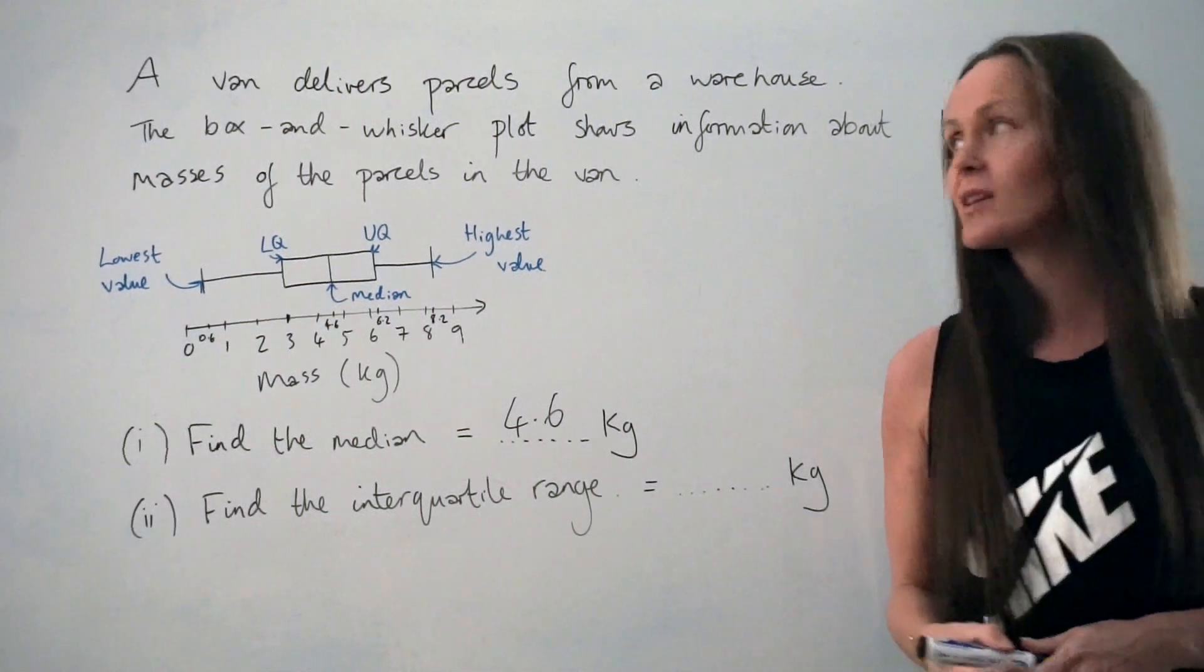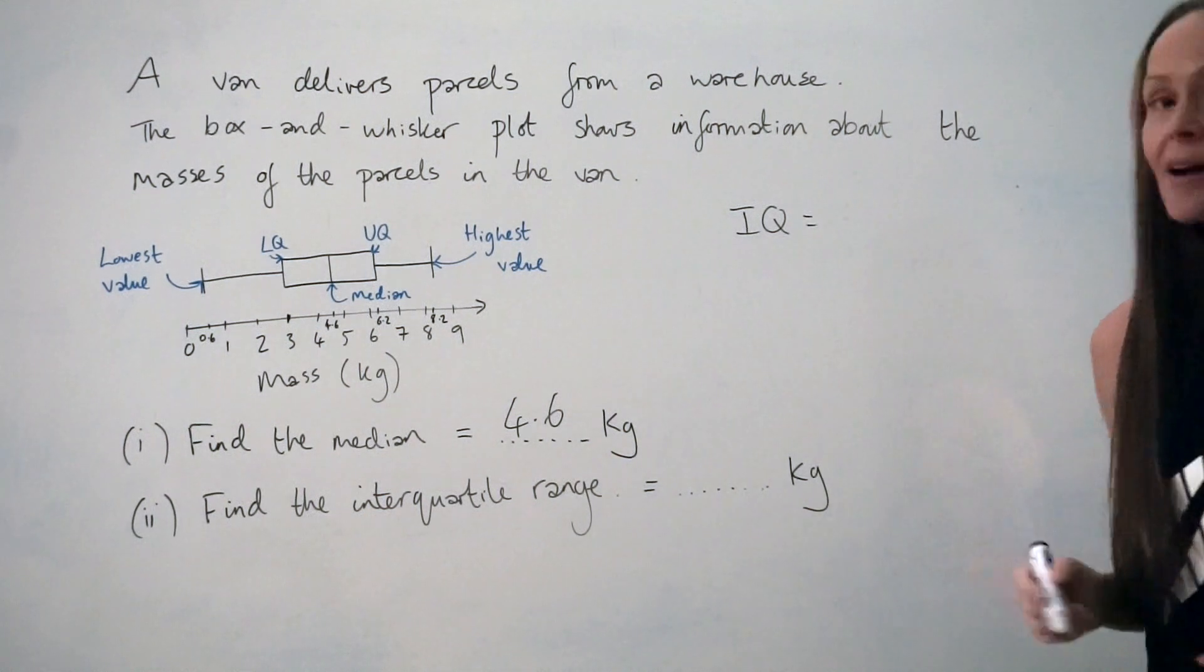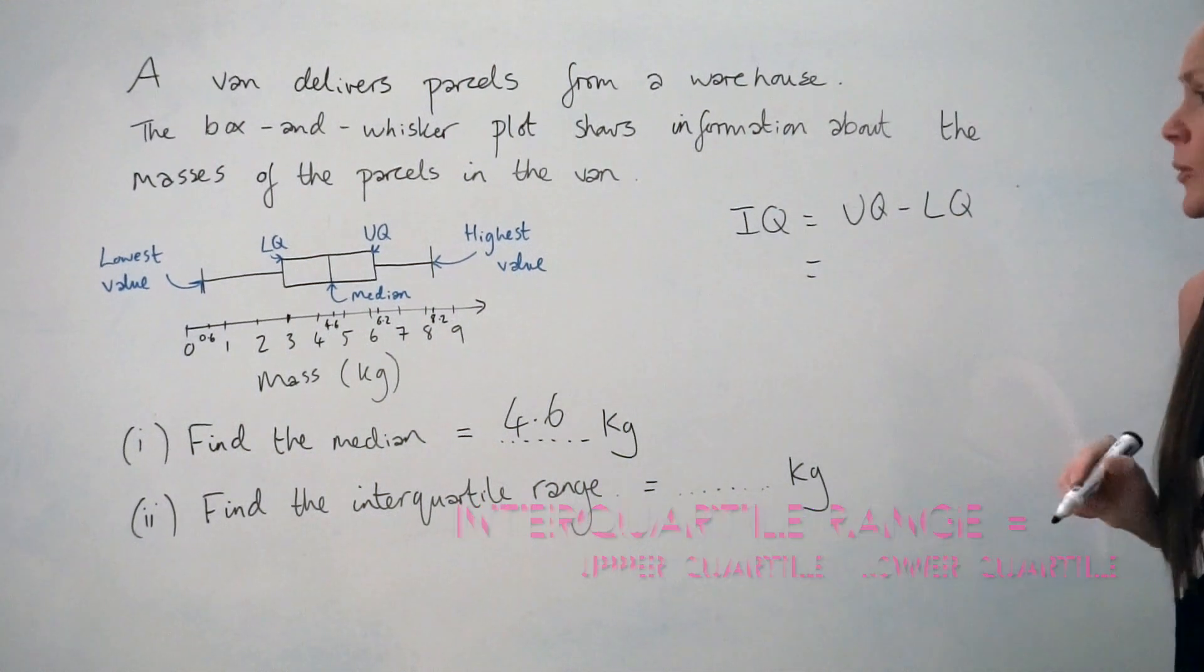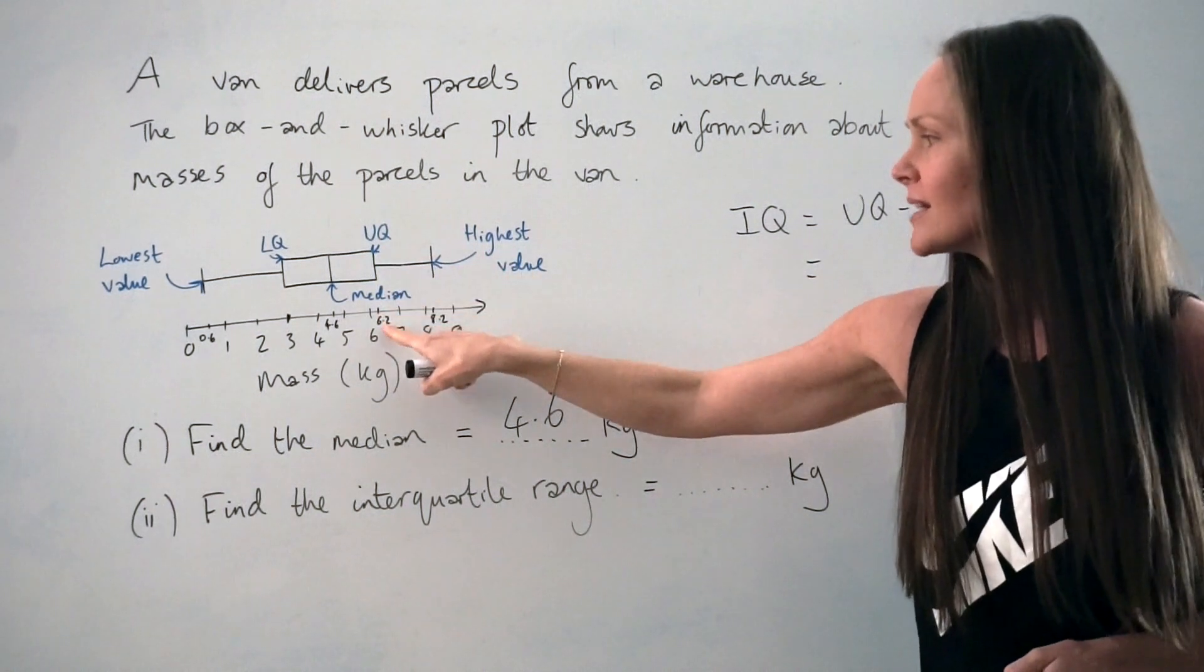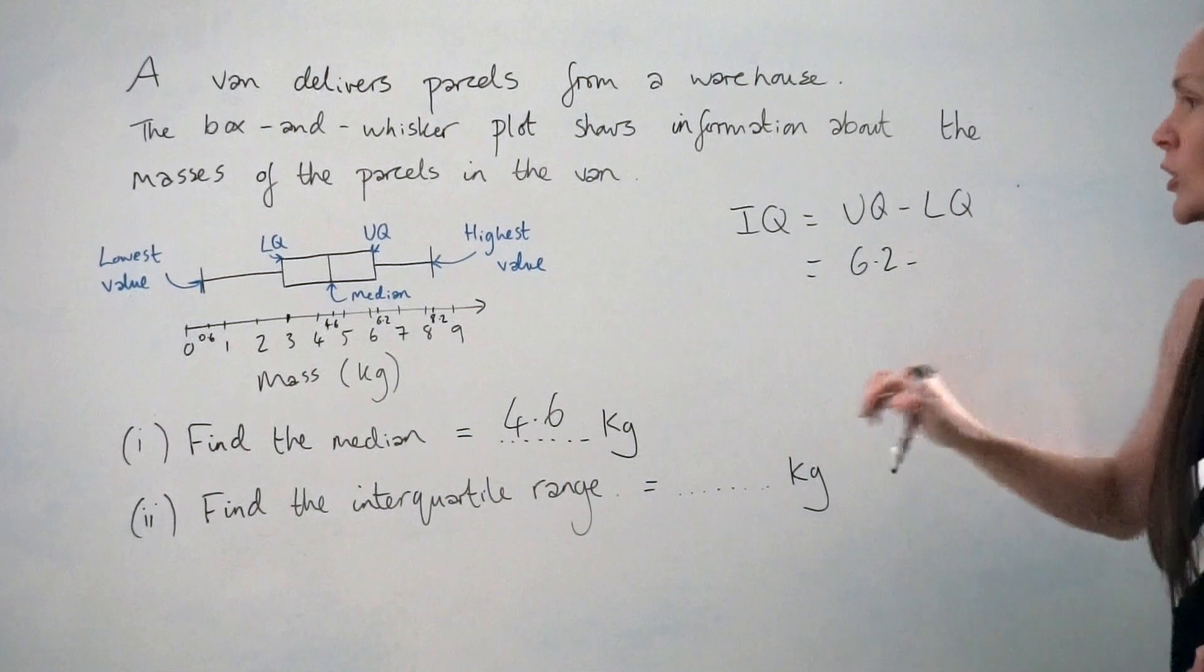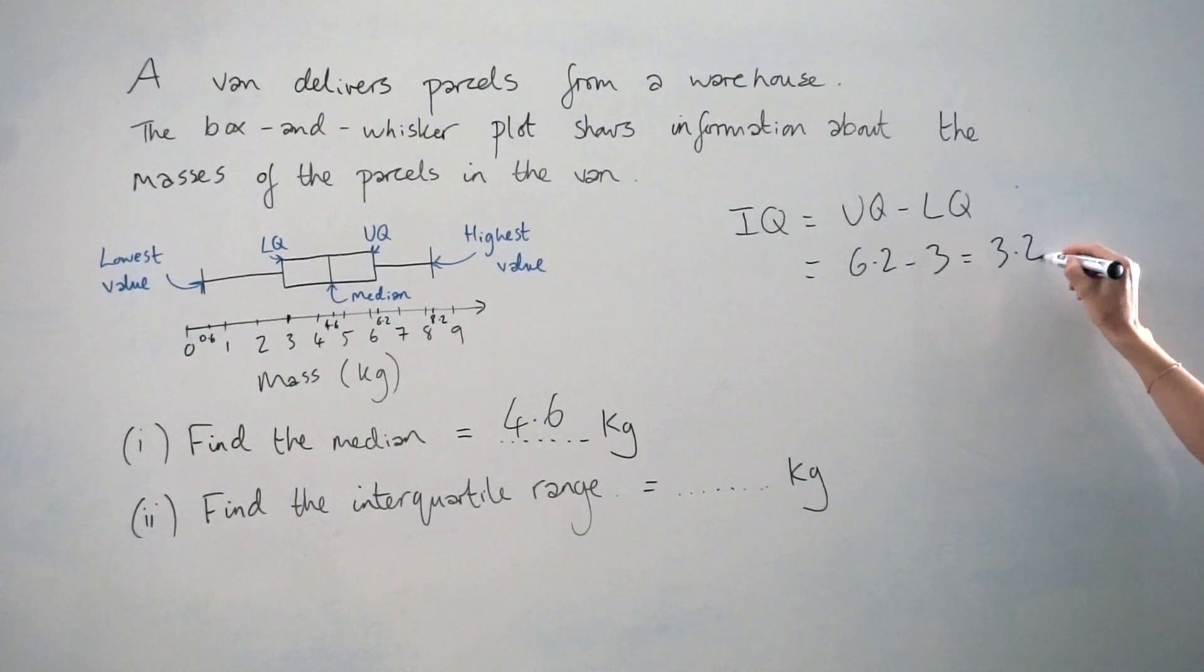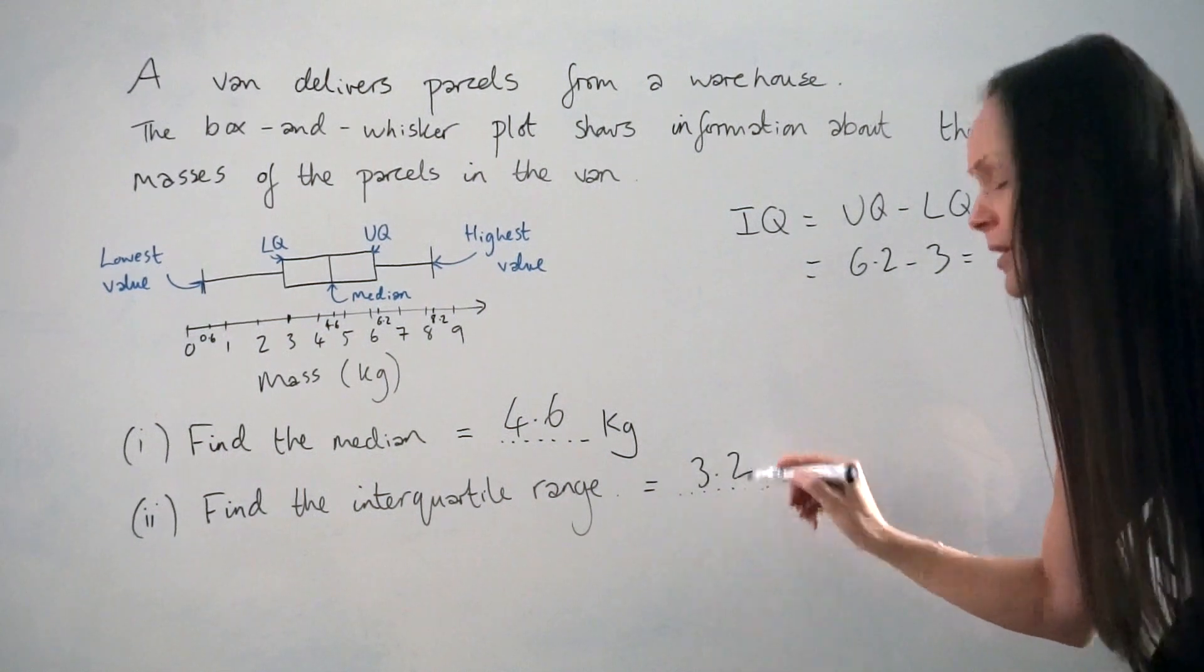Next, we have to find the interquartile range. Interquartile range is found by writing down the upper quartile and subtracting the lower quartile. I already pointed out what the upper and lower quartiles were. The upper quartile is here, 6.2 kilograms, and the lower quartile is over on the left, so 3 kilograms. If I subtract those two values, I get 3.2. So the interquartile range is 3.2 kilograms.